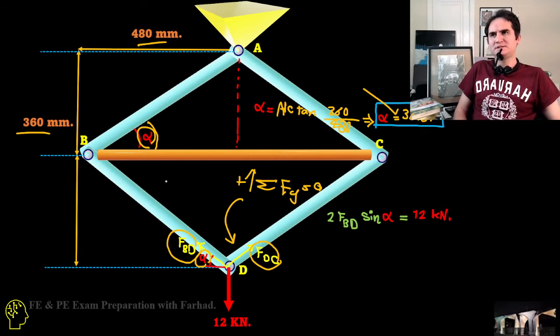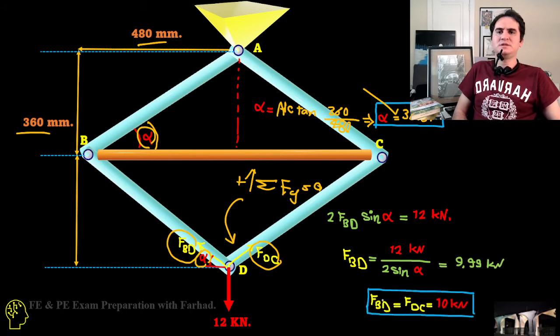So FBD, FDC, FBA, and FAC are equal to each other. Summation of forces in Y direction for point D just give us two times force BD sine of alpha should cancel out the total 12 kilonewton downward force. So it just gives us FBD is equal to FDC, FAB equal to FAC, and all four forces for smaller diameter rods are equal to 10 kilonewton.